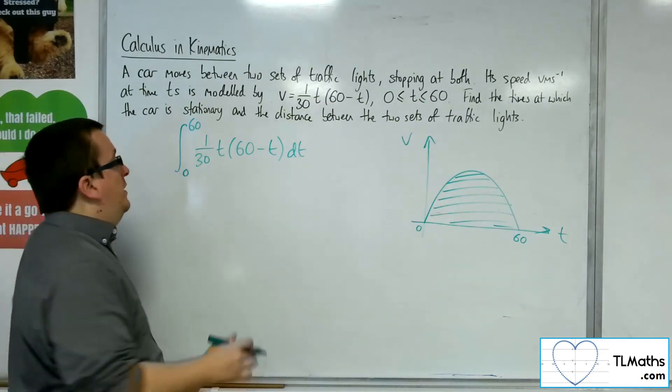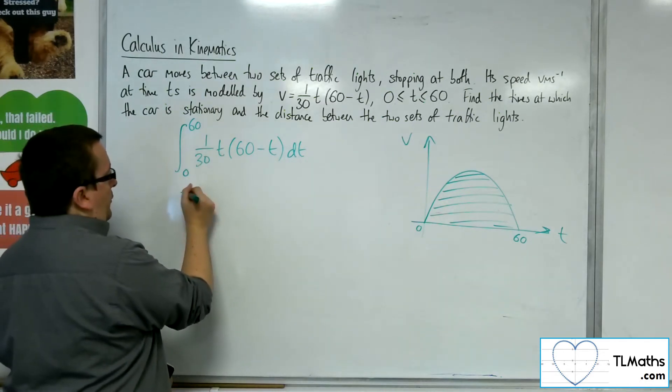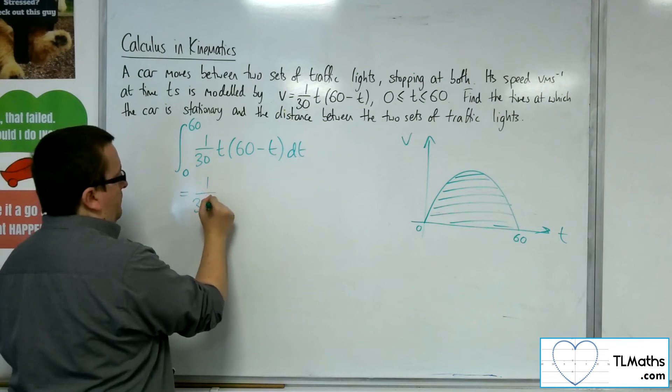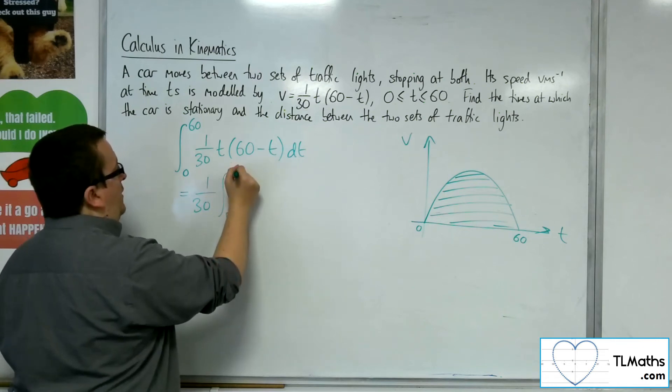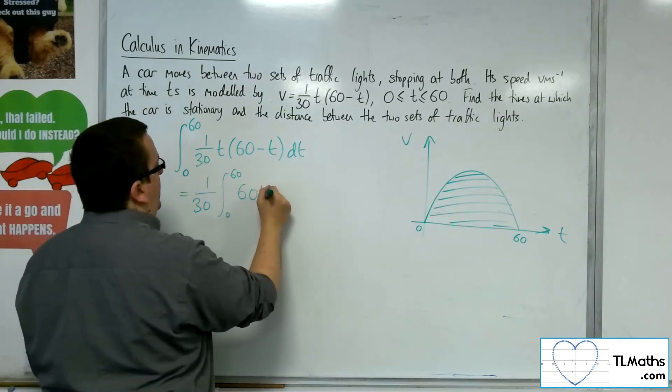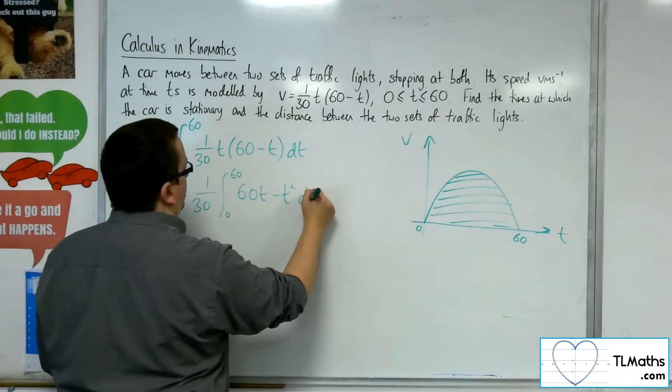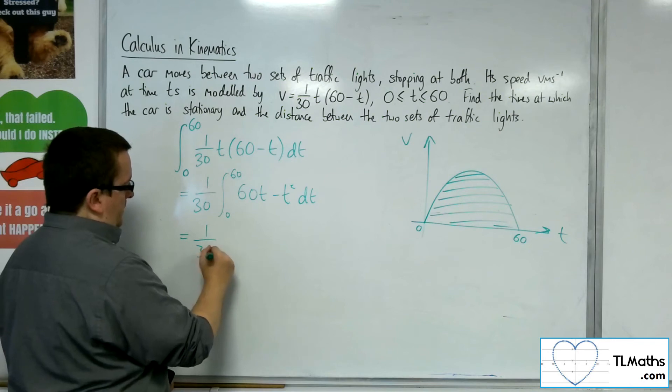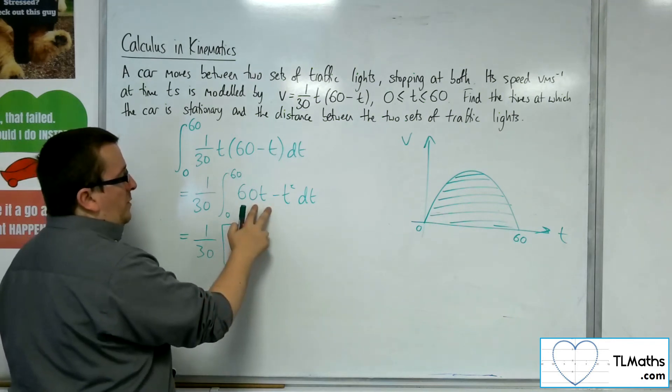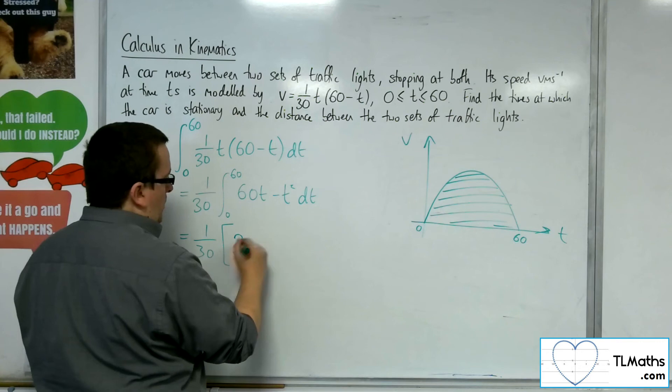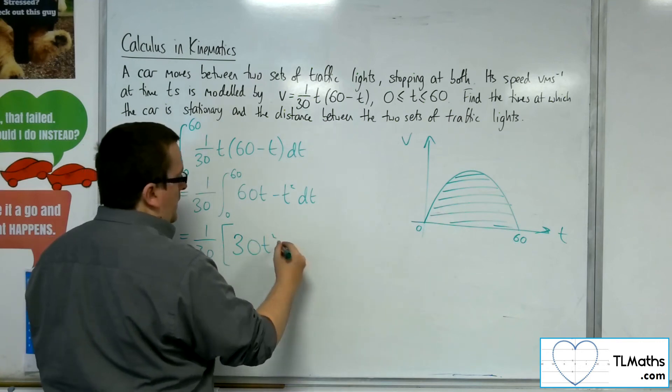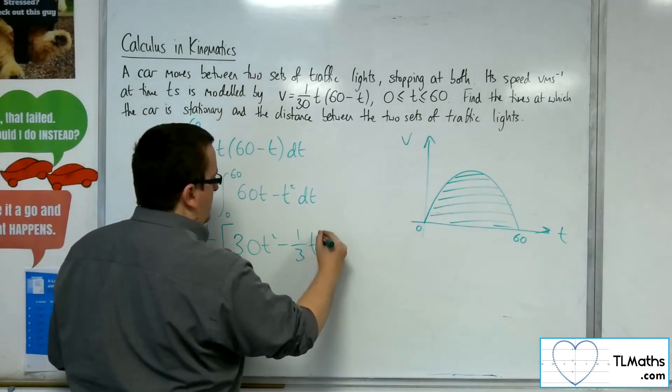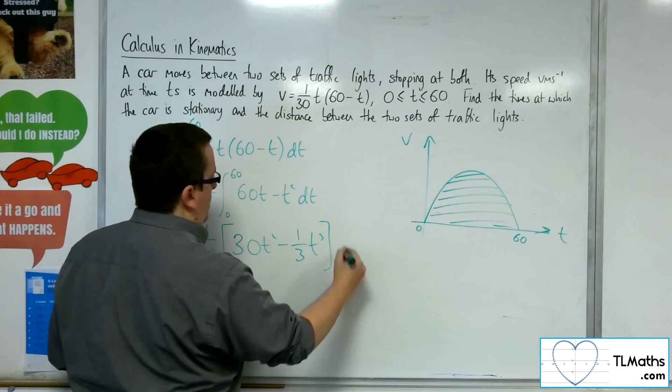So what I'm going to do is I'm going to move the 1 thirtieth outside of the integral, and I'm going to expand the bracket out to get 60t minus t squared. So we've got the 1 thirtieth, and then integrating, adding 1 to the power, dividing by the new power, we'll get 30t squared, take away 1 third t cubed, between 0 and 60.